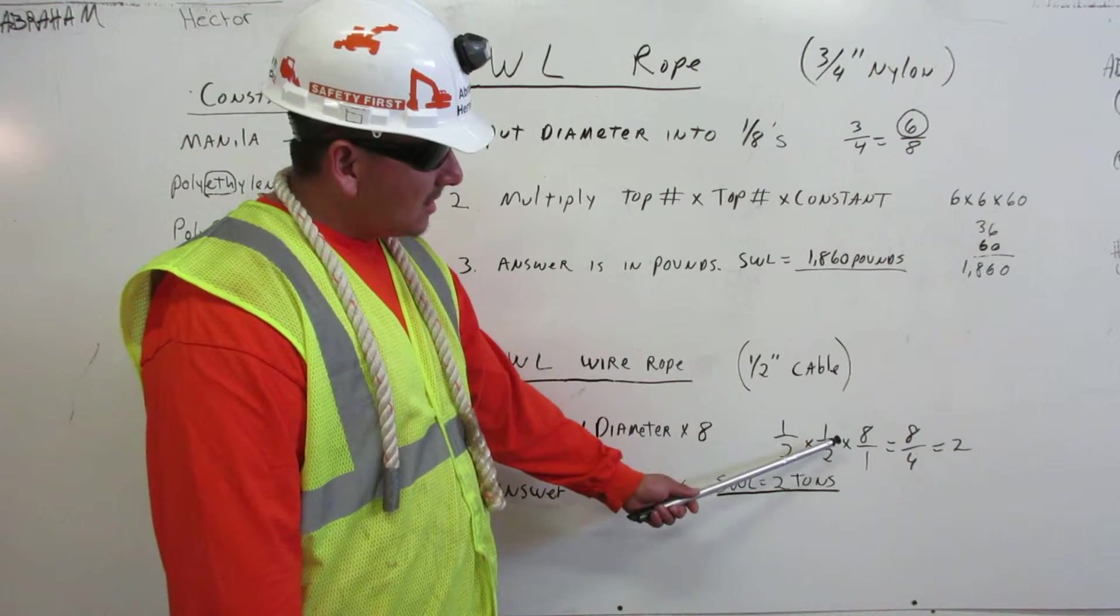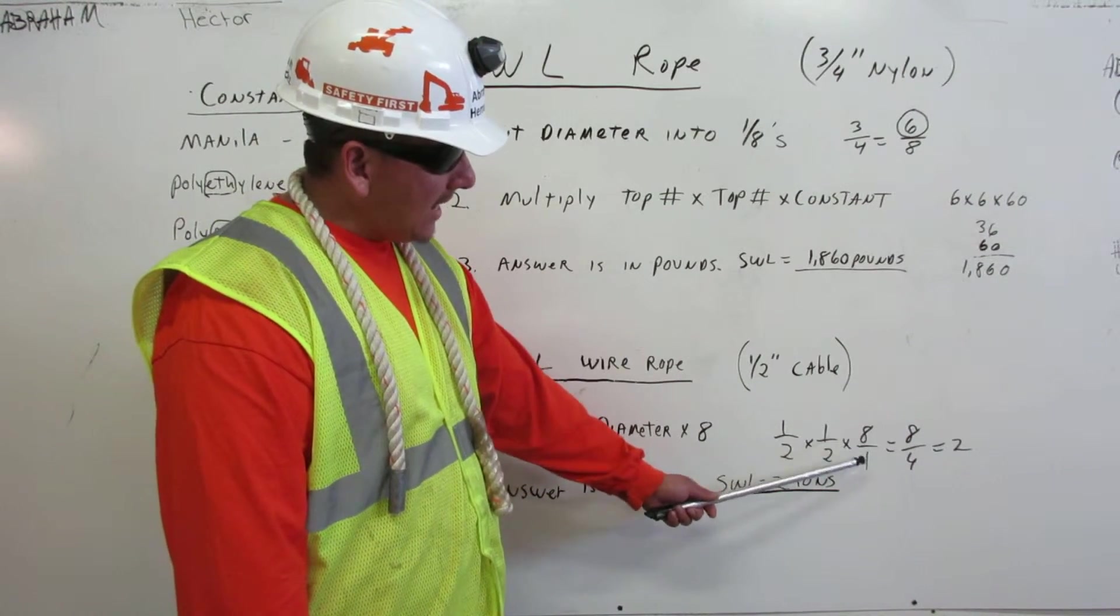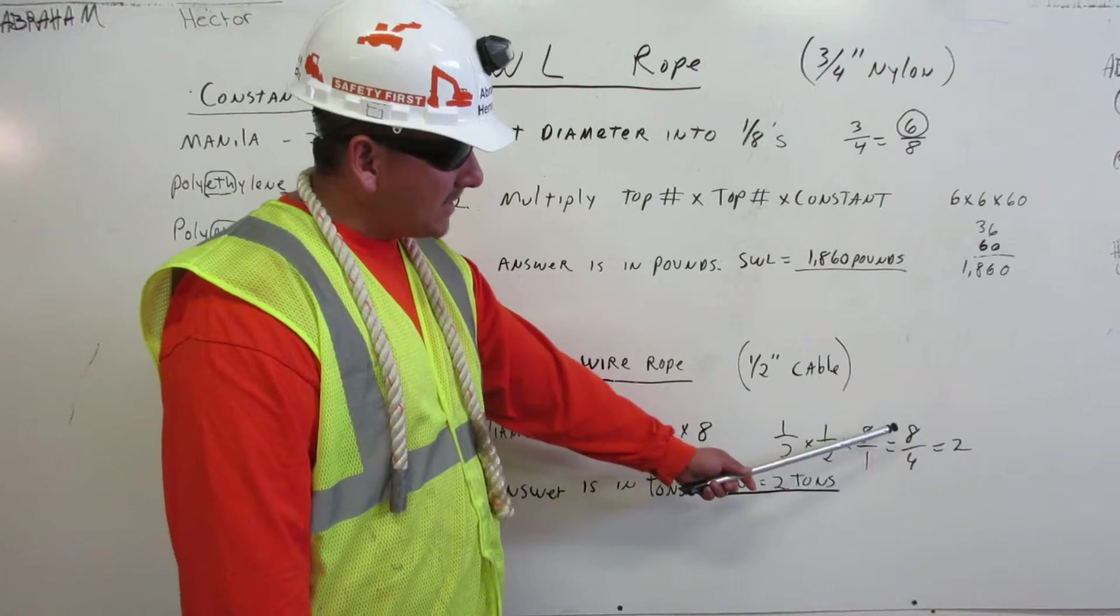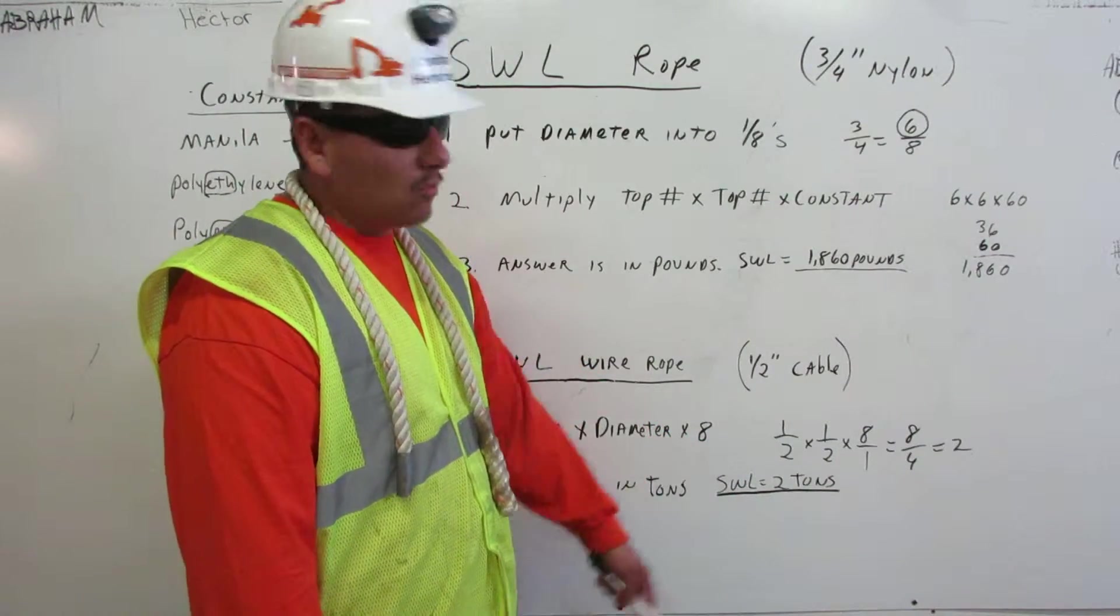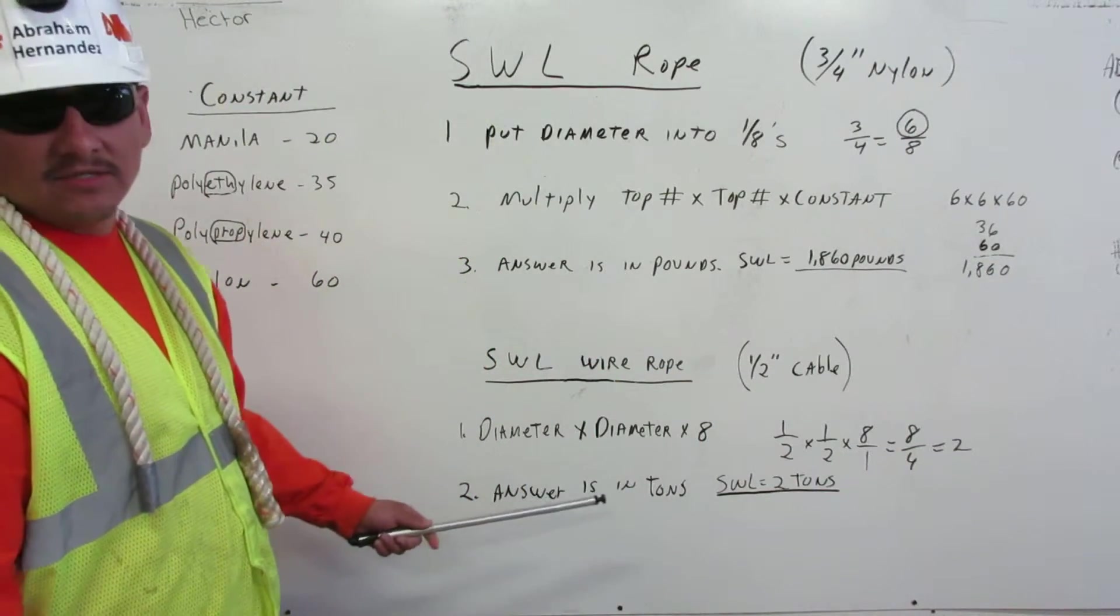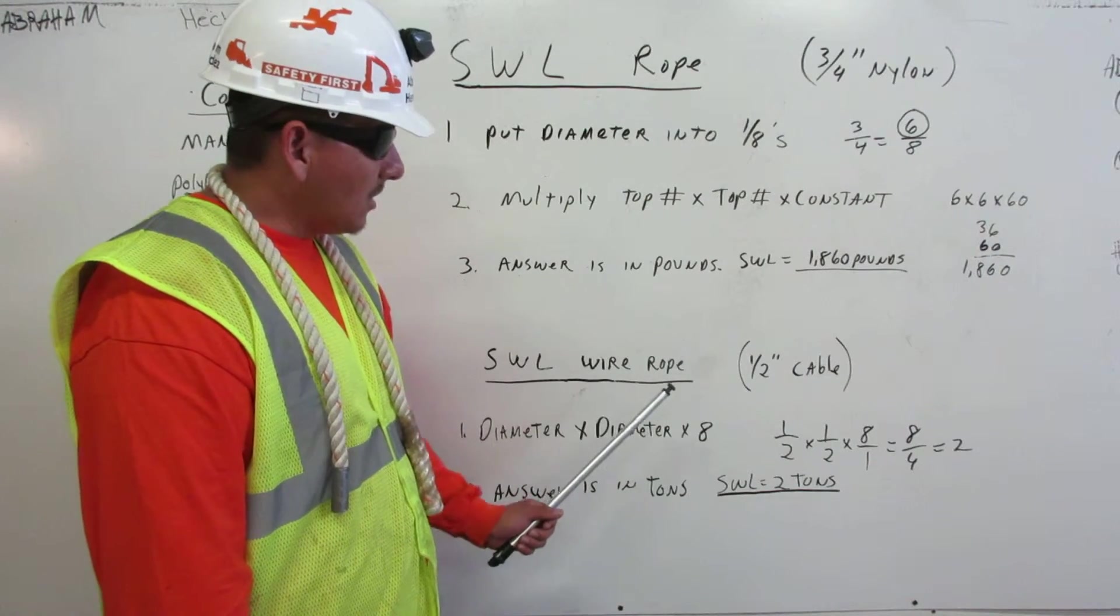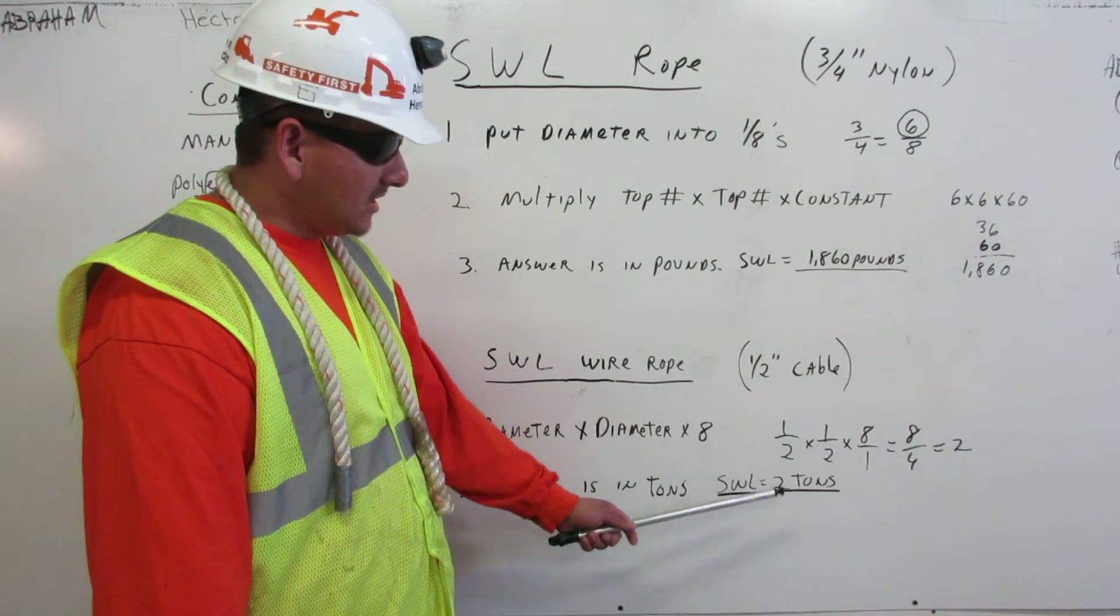Since we're multiplying fractions, I went ahead and put the eight over one, that way I could multiply across, and it gave me eight quarters, which is equal to two. The answer is in tons, so a safe working load for a half inch cable is two tons.